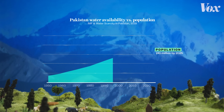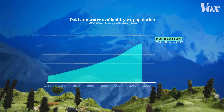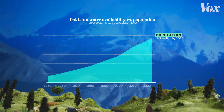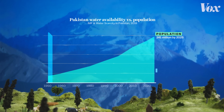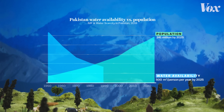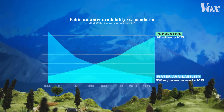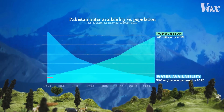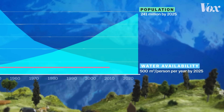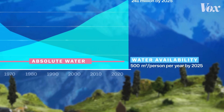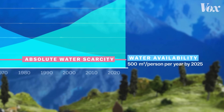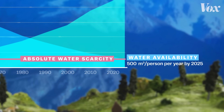In the past 75 years, Pakistan's population has increased five-fold, while water availability per capita is plummeting. By 2025, the region is predicted to reach absolute water scarcity.